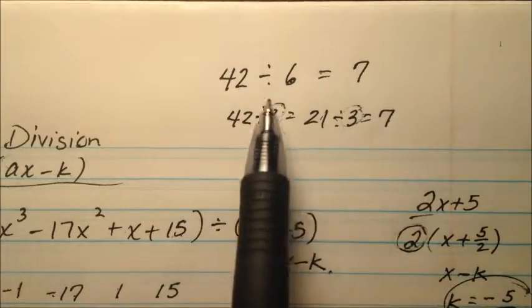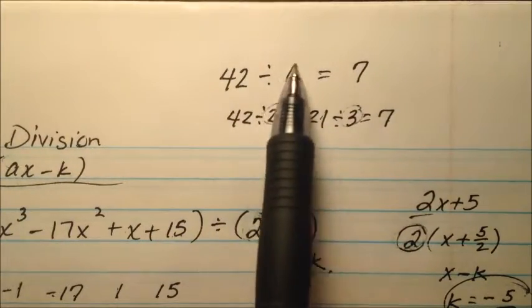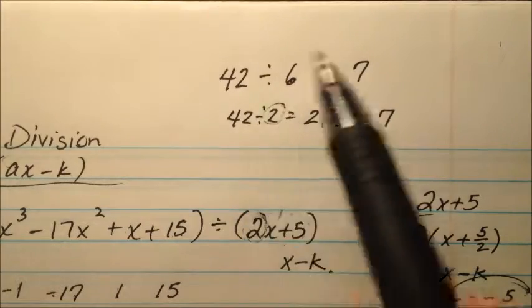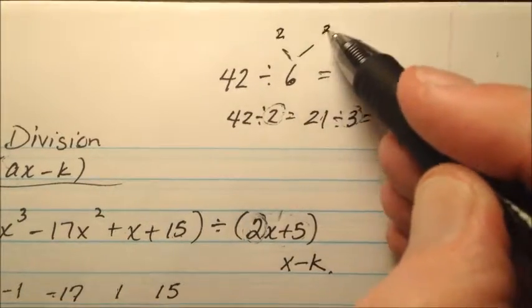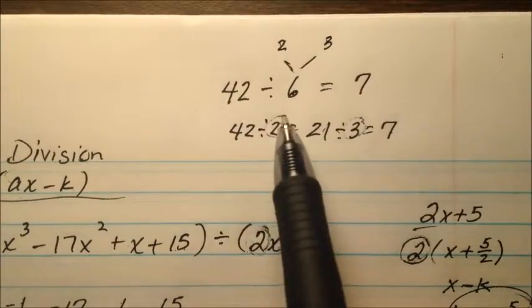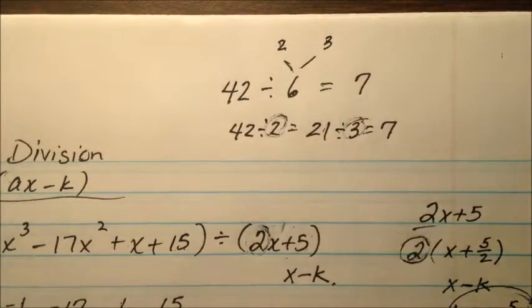And the idea here is that instead of just dividing by some big number or big thing, we take our thing and divide it up. Let's see, 6 is 2 times 3, so let's first divide by 2 and then divide by 3.